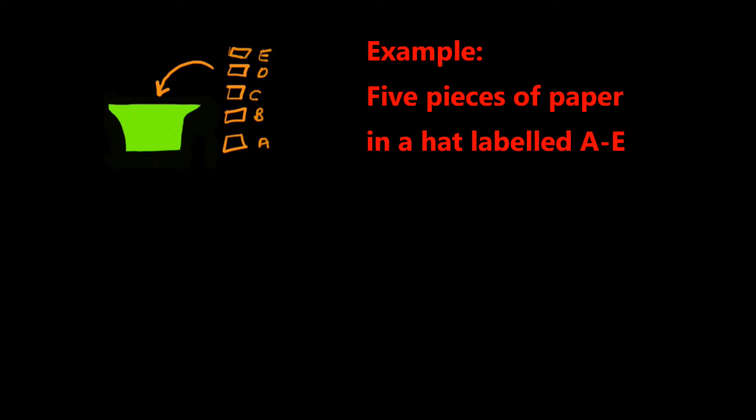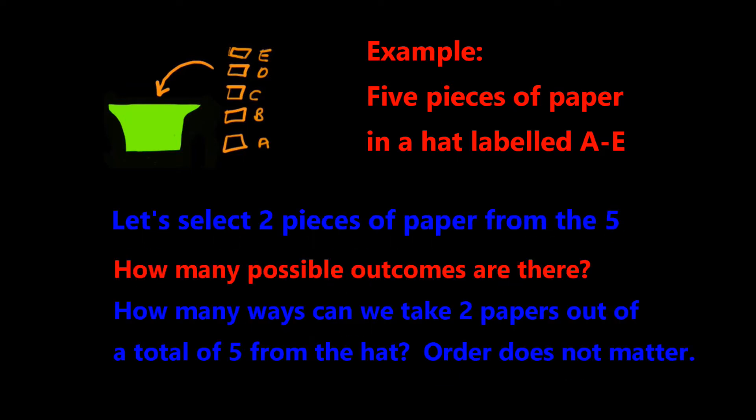Let's say for example we have five pieces of paper in a hat labeled A through E. If I put my hand in the hat and pull out two of the pieces of paper, how many different possible outcomes are there? In this case, order does not matter, so we need the combination formula.